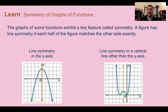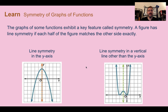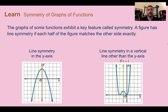Let's learn. Symmetry of graphs of functions. The graphs of some functions exhibit a key feature called symmetry. A figure has line symmetry if each half of the figure matches the other side exactly. The example on the left has line symmetry on the y-axis — the graph is a reflection that matches each side. On the right side, we have line symmetry, but it's on a line that's not the y-axis. It's shifted over 1, so our axis of symmetry would be on the line x equals negative 1. It still has symmetry because each half is a reflection of the other.